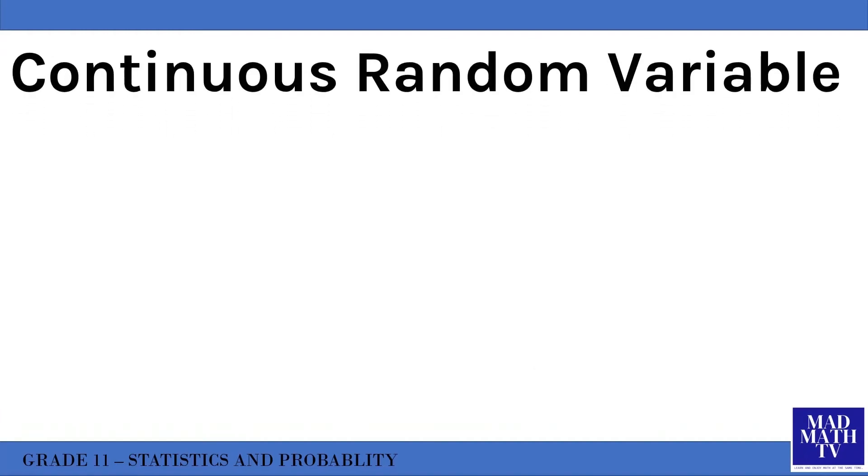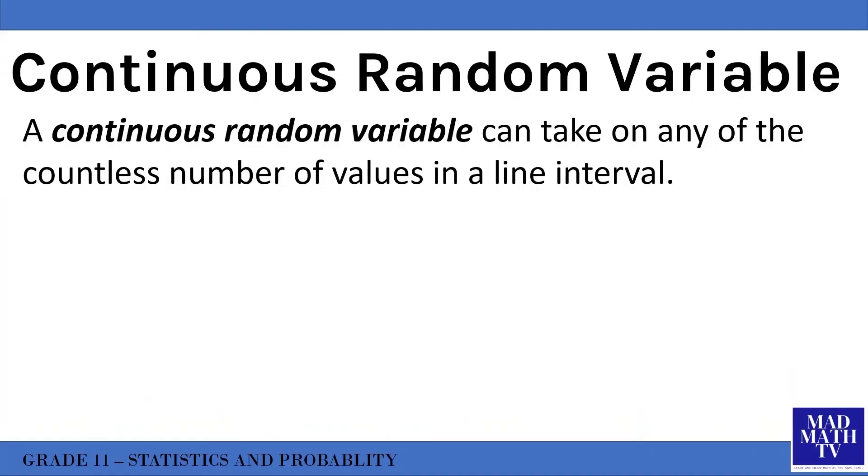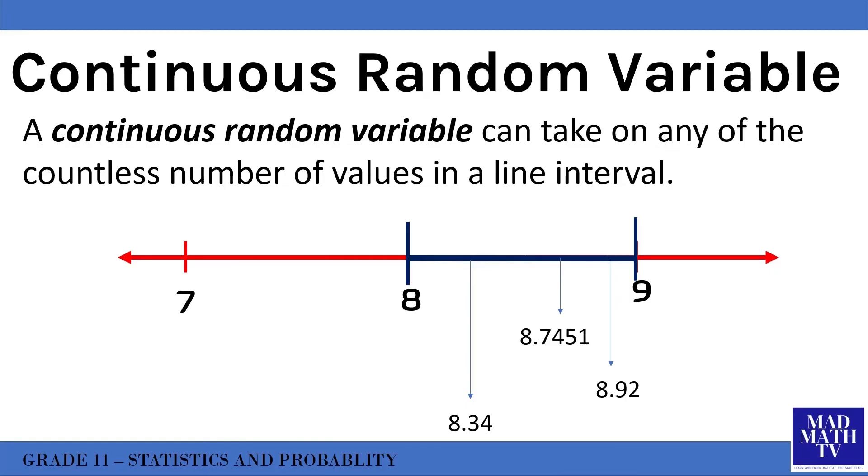What makes continuous random variable different from discrete? A continuous random variable can take on any of the countless number of values in a line interval. It means that in a continuous random variable we can take all the possible values in a given range. In a discrete random variable we only consider integers such as 8 and 9. But in a continuous random variable it can take any values between 8 and 9, so it could be 8.92, 8.34, or 8.71451 and a lot more. That's actually infinite - there are infinite values in a continuous random variable because we cannot determine the exact number of values between 8 and 9.